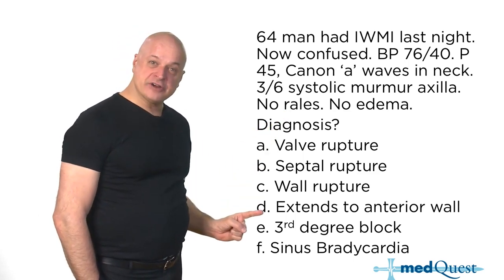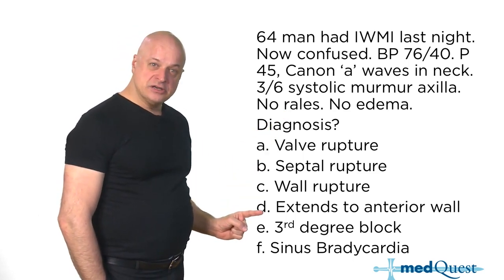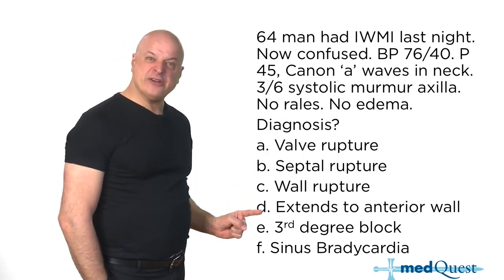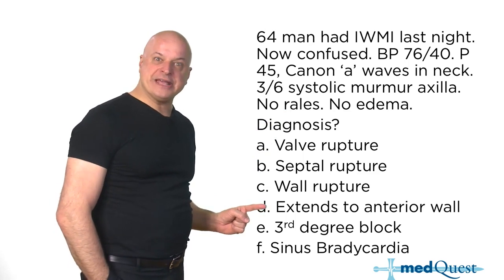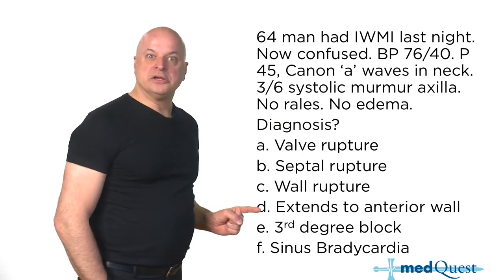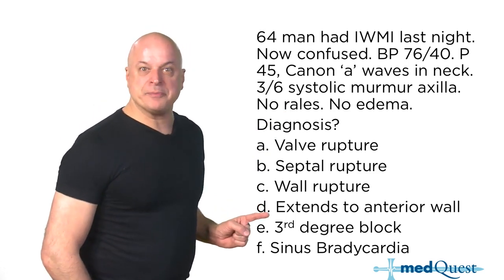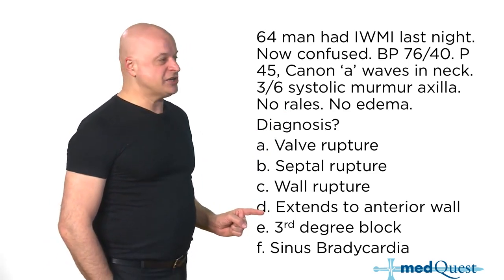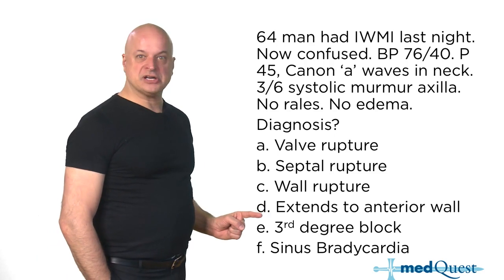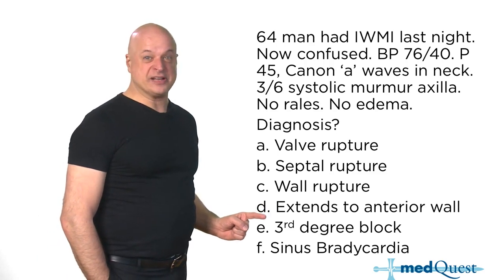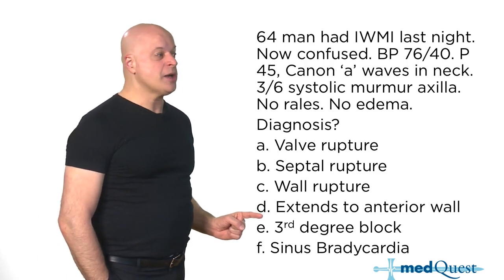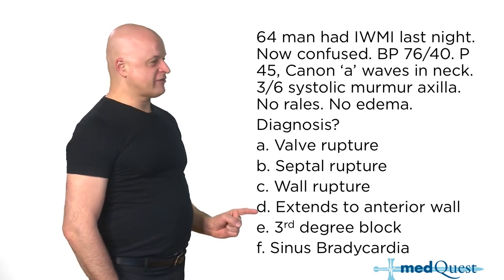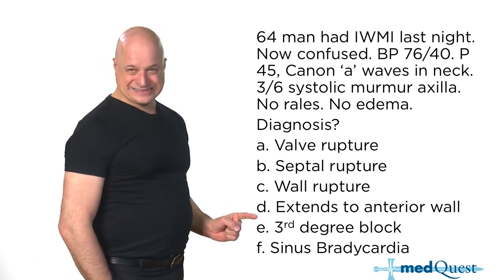Extension of the infarction: first it's an inferior wall, now it's killed off your anterior wall. Your blood's not pumping anywhere. You've extended your infarction and developed sudden pump failure — you should have rales.